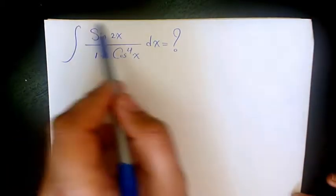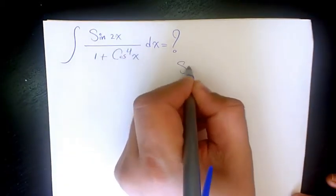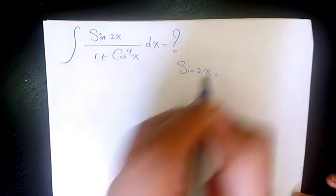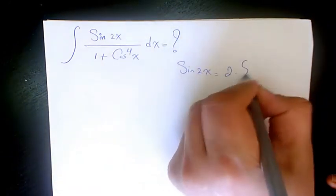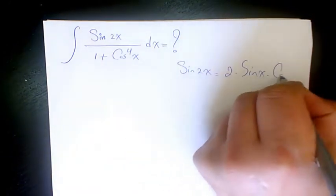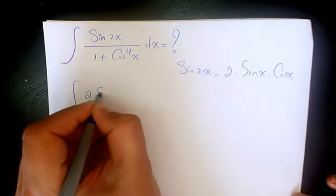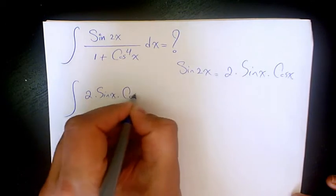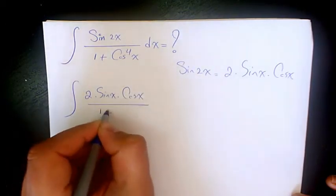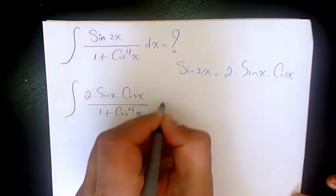First of all I'm going to use compound angles or double angle formula. Sine 2x equals 2 times sine x times cosine x. You sub it there, it's going to be 2 times sine x cosine x over 1 plus cosine to the power of 4 dx.